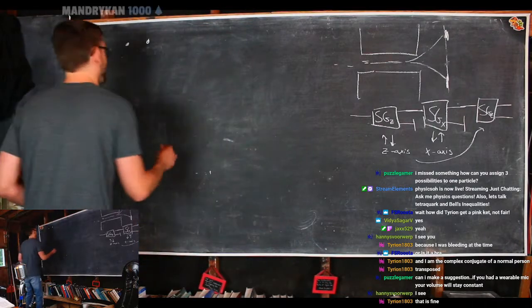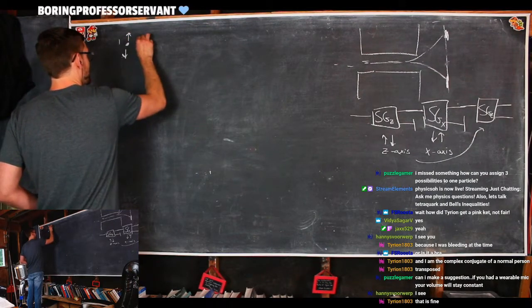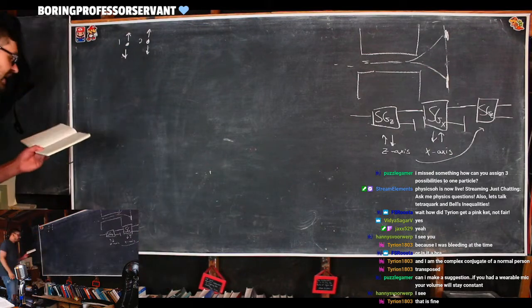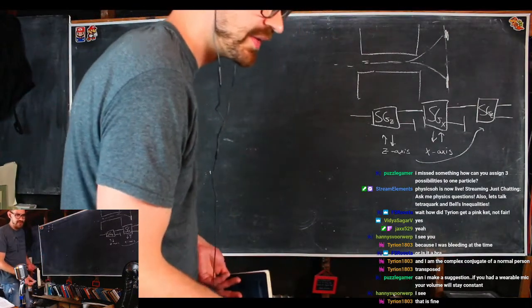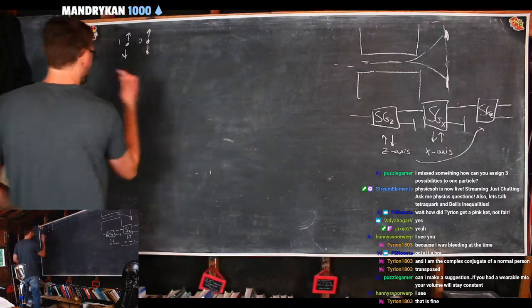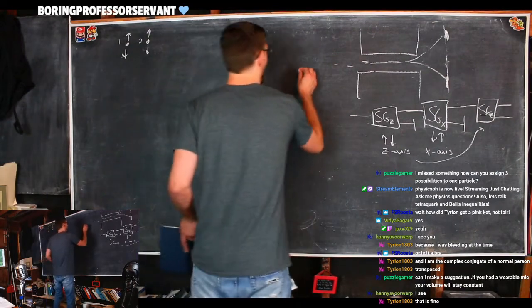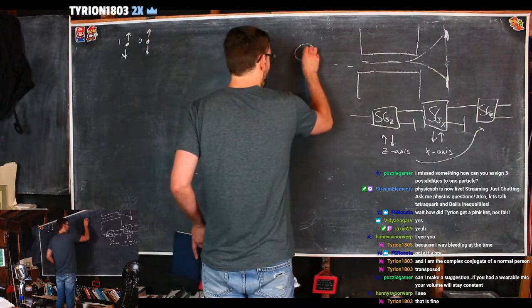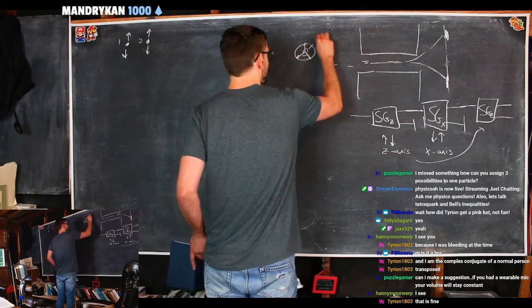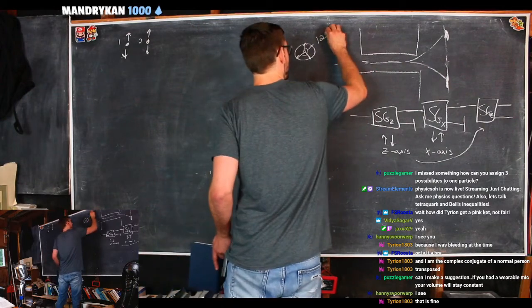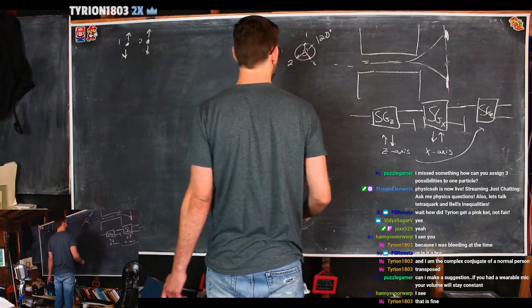We can have a particle spinning up and a particle spinning down in some fuzzy mixture. The axes don't need to be 90 degrees apart — we could make them whatever we want. What Brian Greene was talking about is having axes on a two-dimensional plane where all three angles are 120 degrees apart: one going here, one here, one here. We can measure the spin of particle one and two along any of these axes — it doesn't matter. We'll call them A, B, and C.